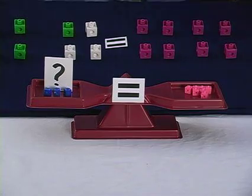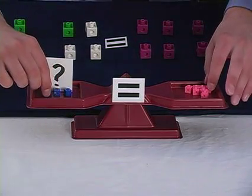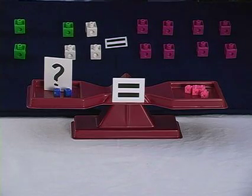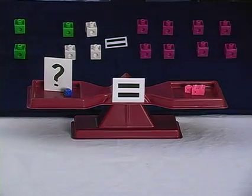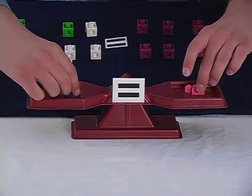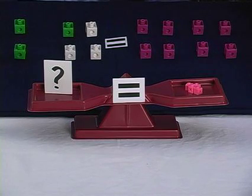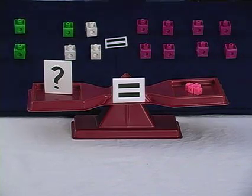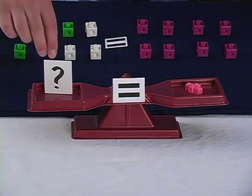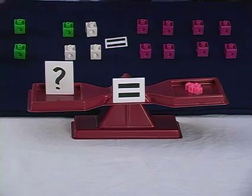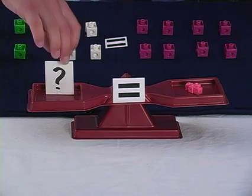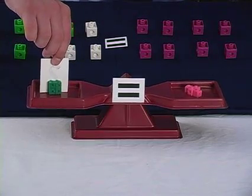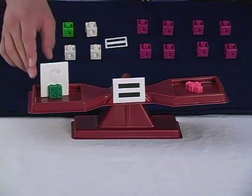Well I'm going to take away one block from each side. That way the balance stays level. And there's no more that I can take away without getting into the question mark. So now I know that what goes in the box is 4, since the question mark is balanced with 4 blocks.